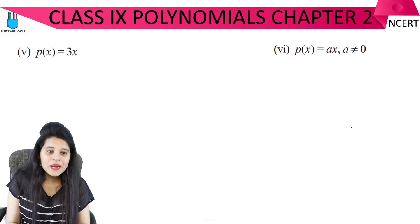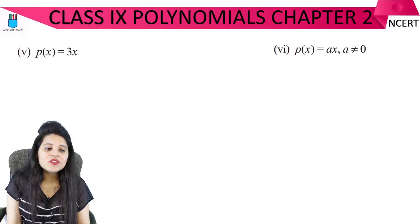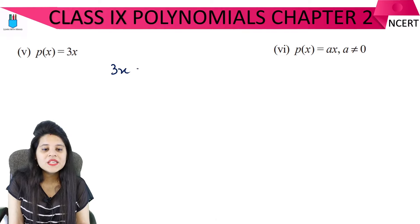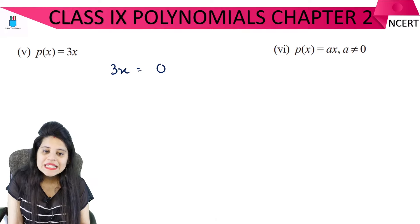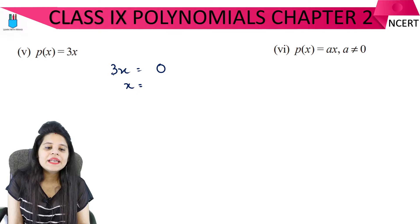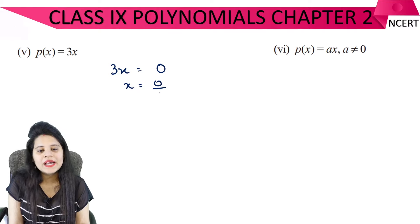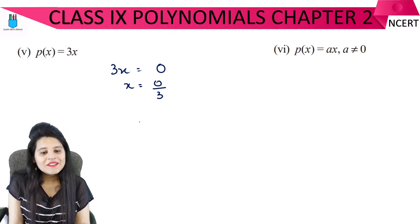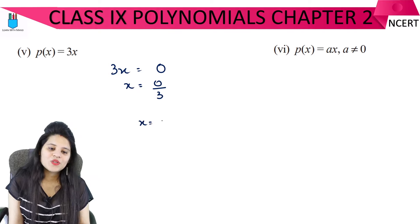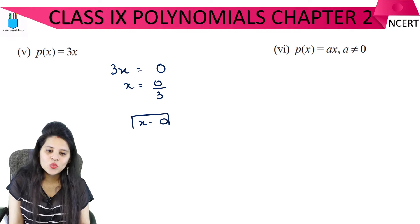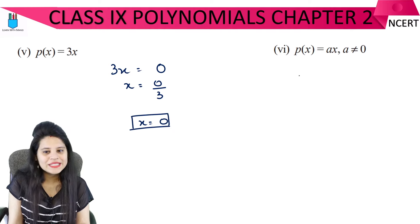For the next part, we have 3x. Set 3x equal to 0. There is no separate constant value, so we divide both sides by 3, and the value of x is equal to 0.